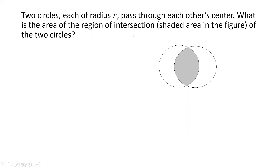A circle is the simplest of shapes that you can get. In fact, when a child learns to draw shapes, the first shape he or she often draws is a circle. Yet there are many interesting geometry problems on circles, some of which are not only interesting but also quite challenging. This problem concerns two circles, each of radius R, which pass through each other's center, and we are asked to find the area of the region of intersection of those two circles.